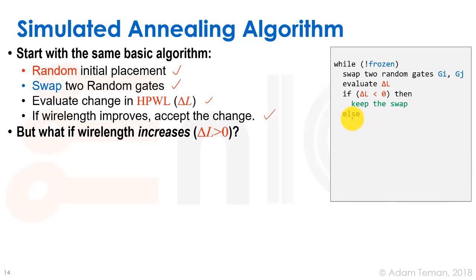But the question is: what happens if the wire length increases? If delta L is smaller than zero, then we keep the swap. But if not, what do we do? We evaluate the annealing probability function. Instead of delta E, the change in energy, we look at the delta L, the change in wire length, and we have this parameter T, which is the simulated temperature - it's not real temperature, but some sort of simulated temperature.